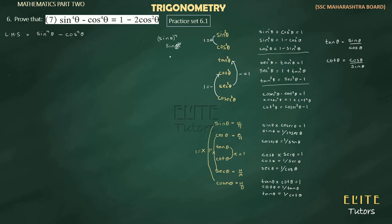So sine raised to 4 theta — since we have 4 times multiply, we convert it to 2 times 2, and we can write it as sine squared theta, all squared. Similarly, cos raised to 4 theta becomes cos squared theta, all squared.